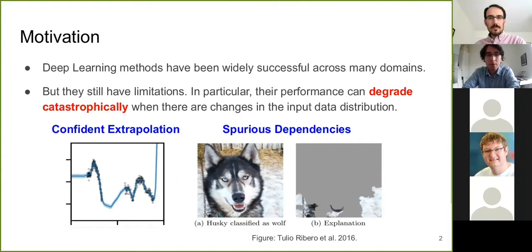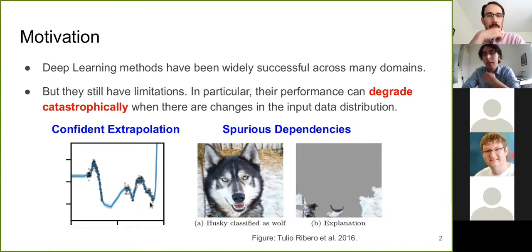I'm going to focus on two particular problems. The first one is the problem of confident extrapolation. Neural networks may make accurate predictions if you feed them input data very similar to the training data. However, if you feed data that is quite different — for example, inputs on the far right in a toy problem — the output of the network can take arbitrarily large values. The network just gives you a point estimate for the prediction, which could be unreliably wrong, and you wouldn't know. That can be problematic in real-world settings.